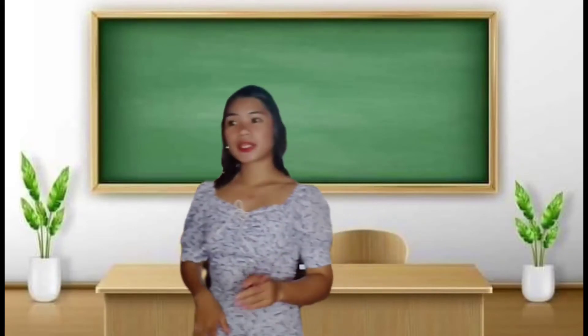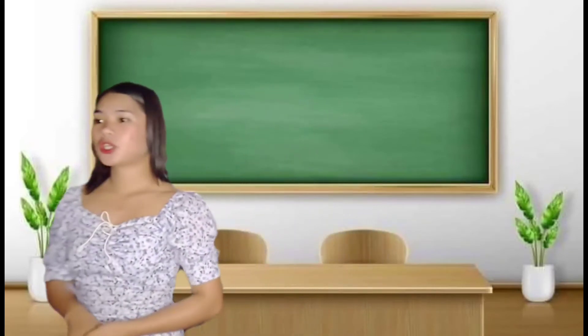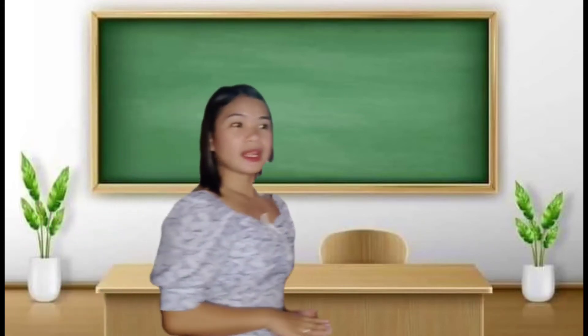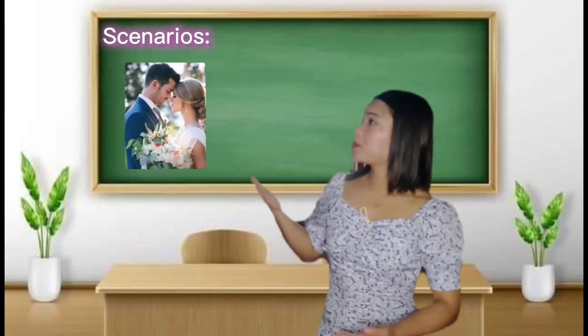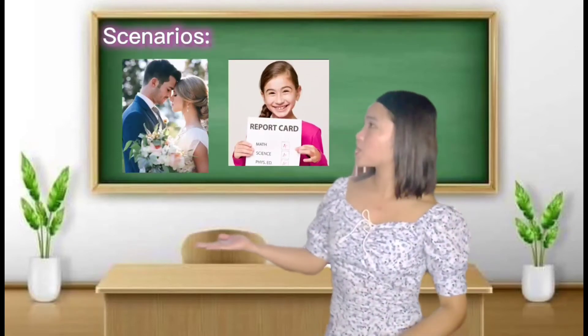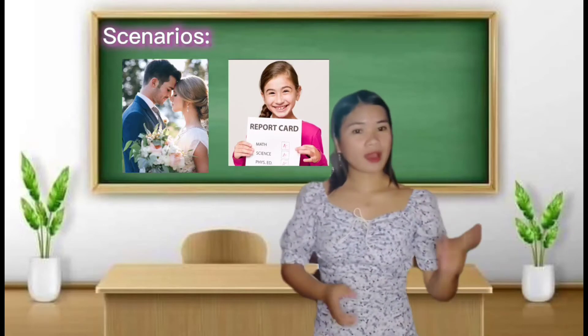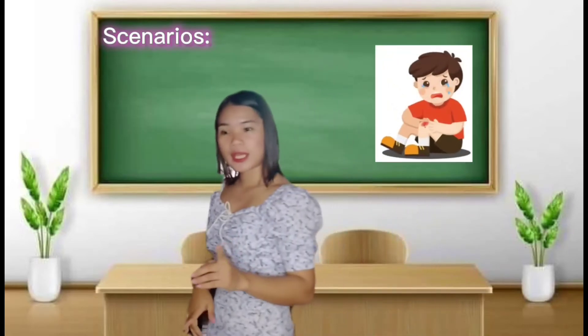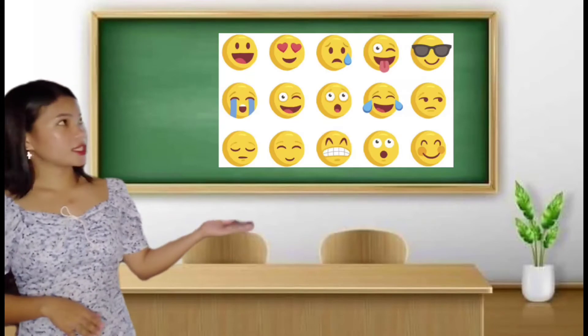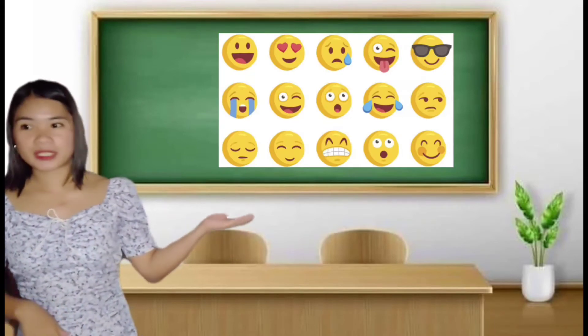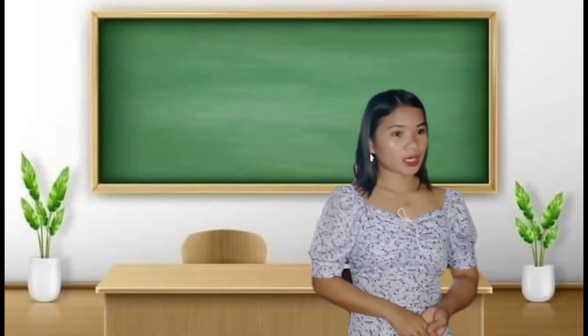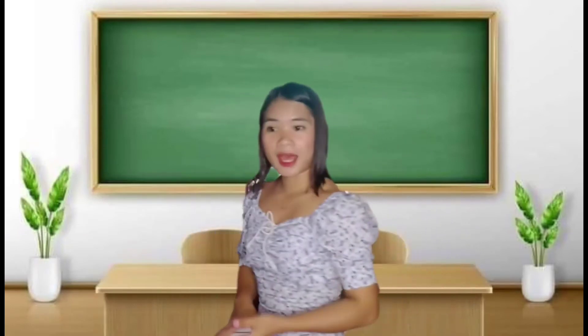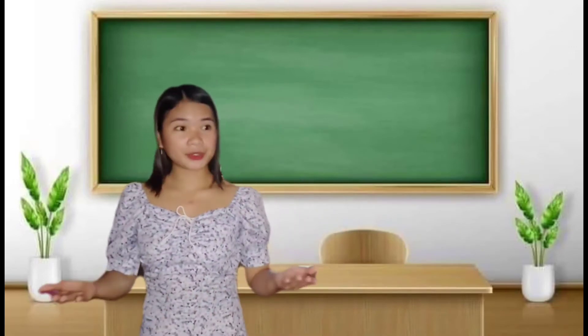This time class, we will have a new lesson since we are done with coordinating conjunction. But before that, we will have first an activity called React On Me. I will present here different pictures with different scenarios and all you have to do is to choose an appropriate smiley in response to the pictures that I will be presenting here. After that, you will imitate the picture or the smiley that you have chosen. Am I understood?